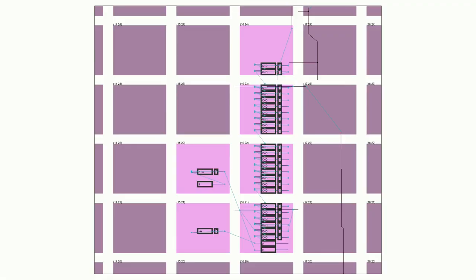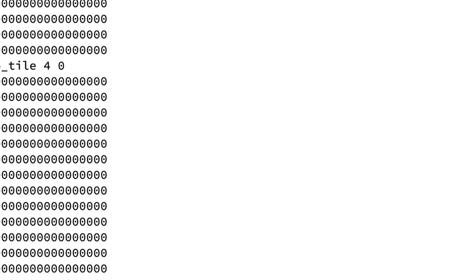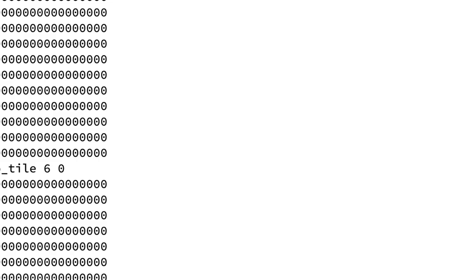Once packing is complete, the tool proceeds to place and route. This process involves iteratively figuring out the optimal arrangement of logic tiles to minimize layout complexity, then performing the routing to determine the minimum wiring necessary to connect everything. Once complete, it outputs an ASC file — an ASCII description of the configuration of the FPGA.